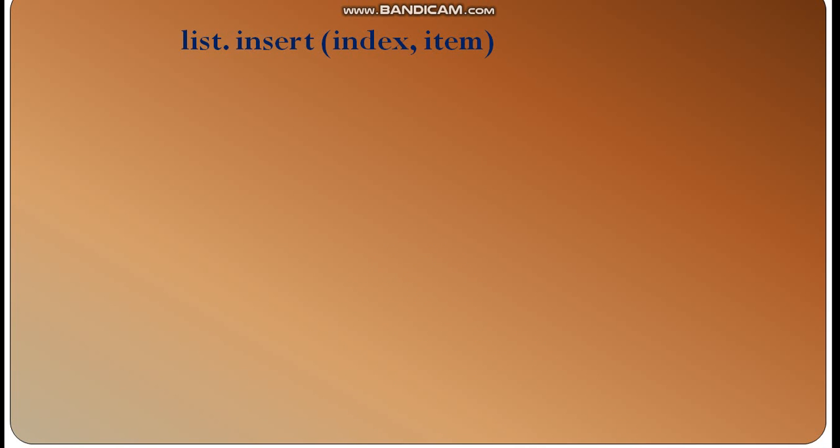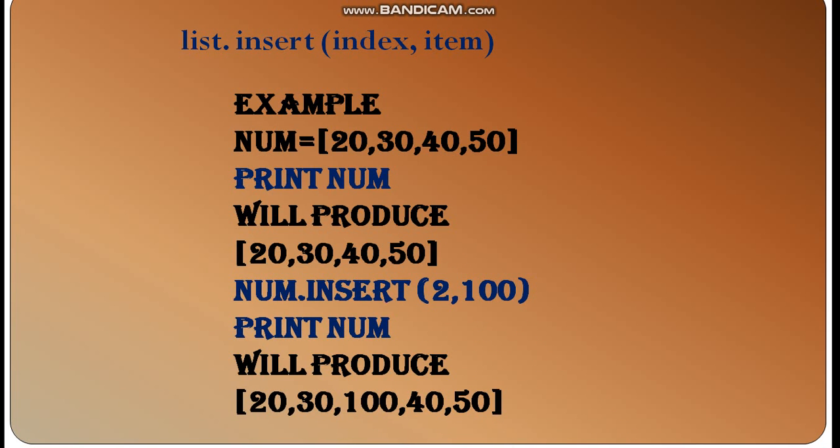Let's see an example. We have a list num with elements 20, 30, 40, and 50. We print and display it. Now we use num.insert with index position 2, and we want to add 100. Here is 0, here is 1, and here is 2, where 100 will be inserted. What happens is that 40 and 50 will be shifted. When we print it, this will show us 20, 30, 100, 40, and 50. We have to insert this in the second position.